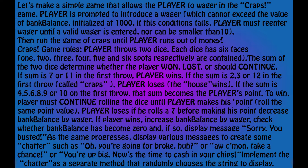These are the craps game rules. The player throws 2 dice, each die has 6 faces: 1, 2, 3, 4, 5, and 6 spots respectively. The sum of the 2 dice determines whether the player won, lost, or should continue.